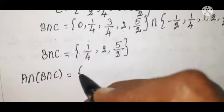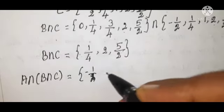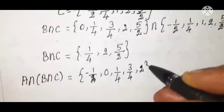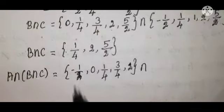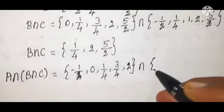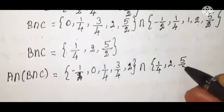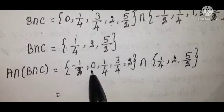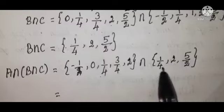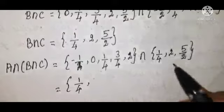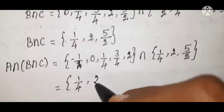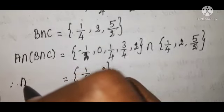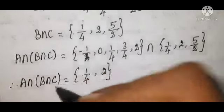Now find A intersection (B intersection C): A is {-1/2, 0, 1/4, 3/4, 2} intersection {1/4, 2, 5/2}. The common values are 1/4 and 2. Therefore A intersection (B intersection C) equals {1/4, 2}. This is equation number one.